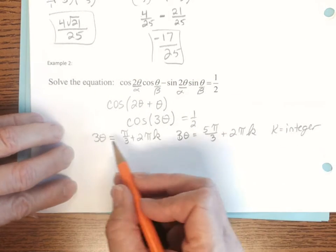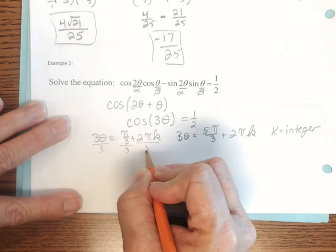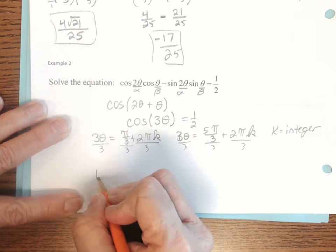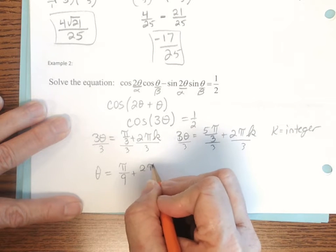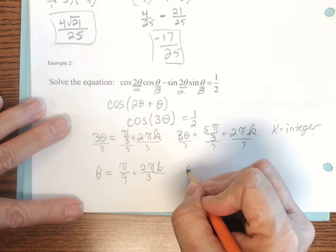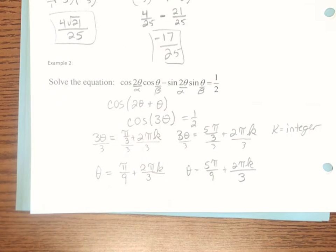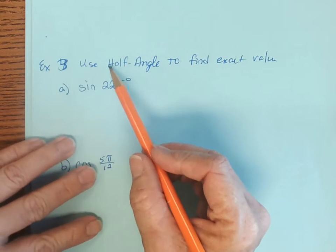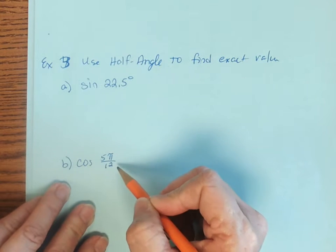k can be a positive or negative integer, but we haven't solved the full problem yet — that's what 3 theta equals. We need to divide each term by 3, giving theta equals pi ninths plus 2 pi k over 3, and theta equals 5 pi ninths plus 2 pi k over 3. Those are the general solutions. Now for example 3, we'll use half angle formulas to find the exact value of sine of 22.5 degrees and cosine of 5 pi over 12.